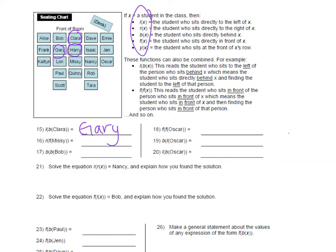Let's try the next one. Missy is who we're starting with. We need to go in front of Missy, which should be Harry again, and then to the right of Harry should be Isaac. Okay, pause the video and do 17 through 20. I'm trying to give you lots of ticket opportunities here, and then we'll go over it together to see if you got it right.